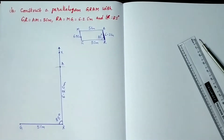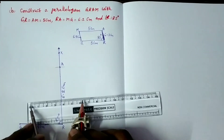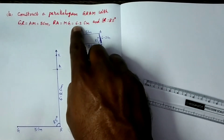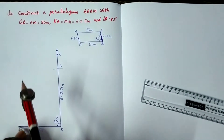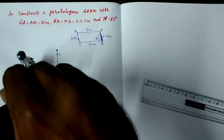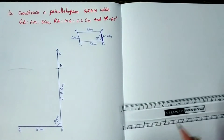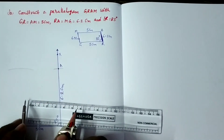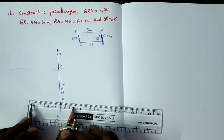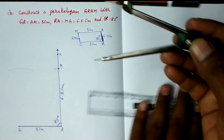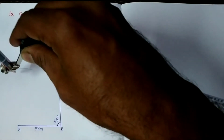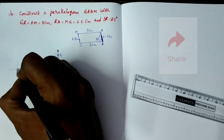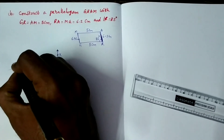Now MG equals 6.2 centimeters. So with the same 6.2 centimeters, take G as center and 6.2 centimeters as radius, draw an arc. Next, AM equals 5 centimeters. So take 5 centimeters radius with compass. Take A as center and this 5 centimeters as radius, draw an arc. So both arcs intersect at M.